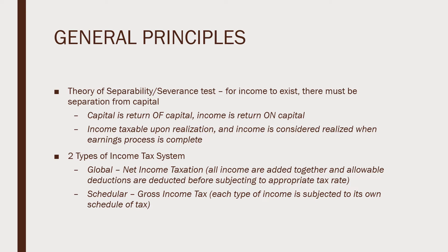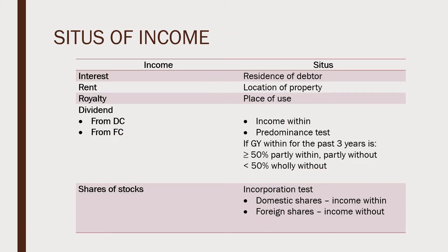For the global tax system, also known as net income taxation, all income are added together and allowable deductions are deducted before subjecting to the appropriate tax rate. An example would be income subjected to the graduated tax table. For the scheduler system, also known as gross income taxation, each type of income is subjected to its own schedule of tax — for example, income subject to final tax or capital gains tax. Here in the Philippines, we apply a semi-global, semi-scheduler tax system.